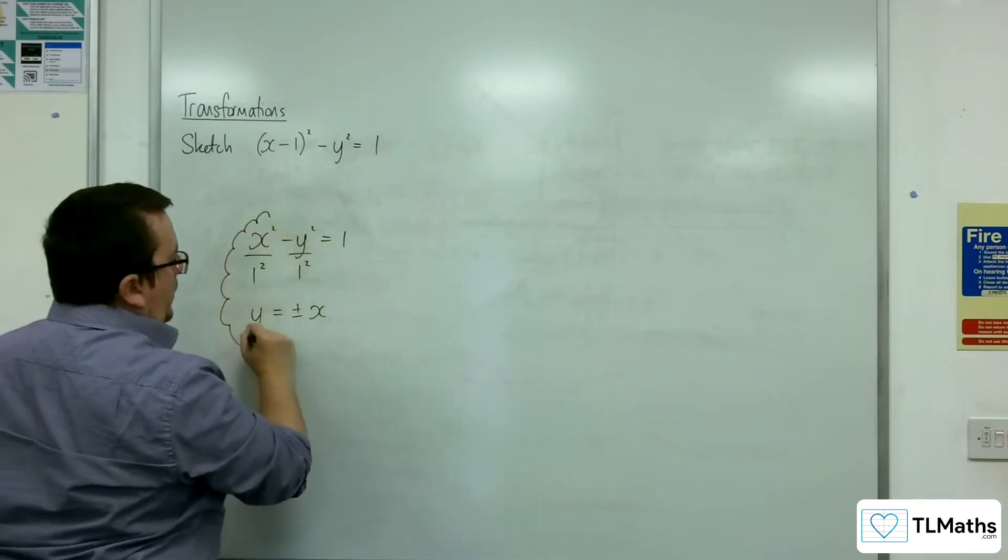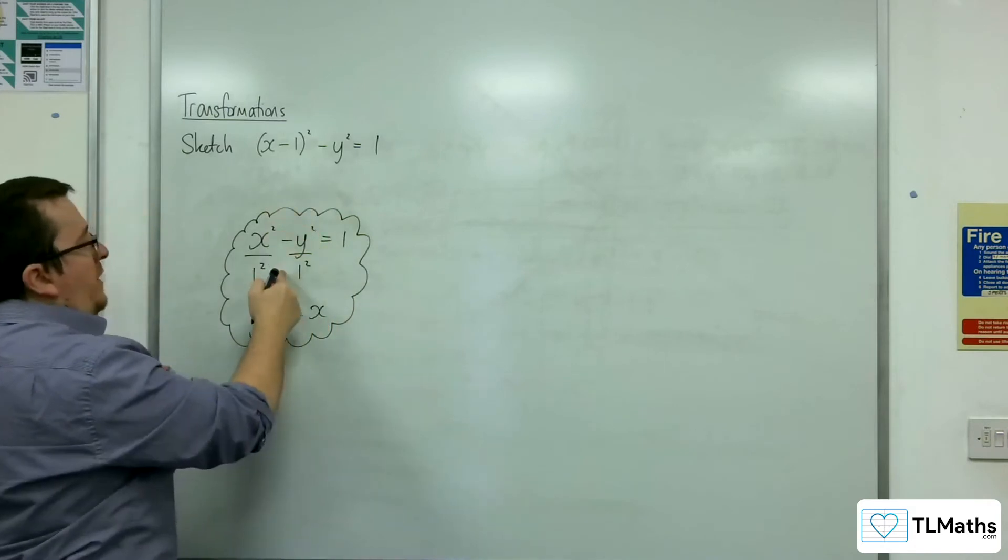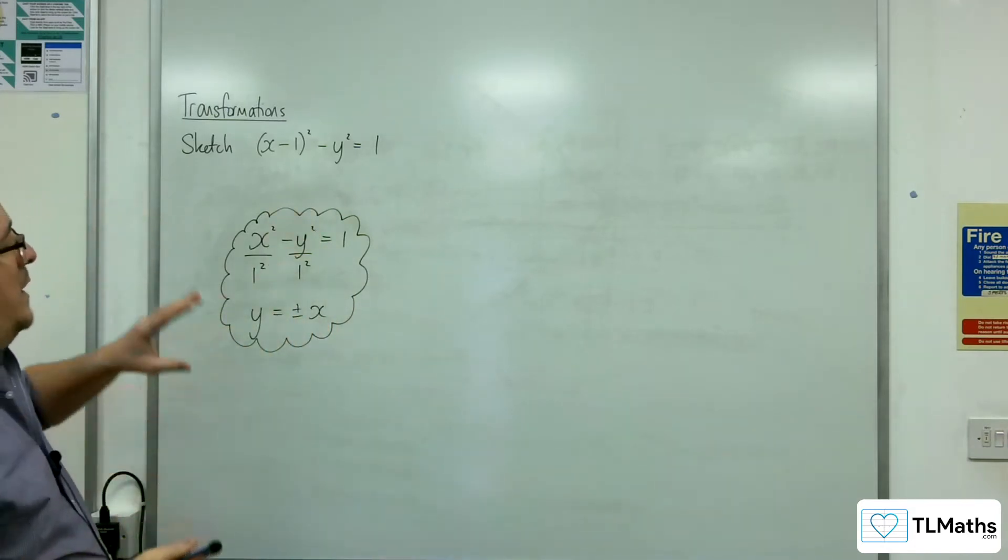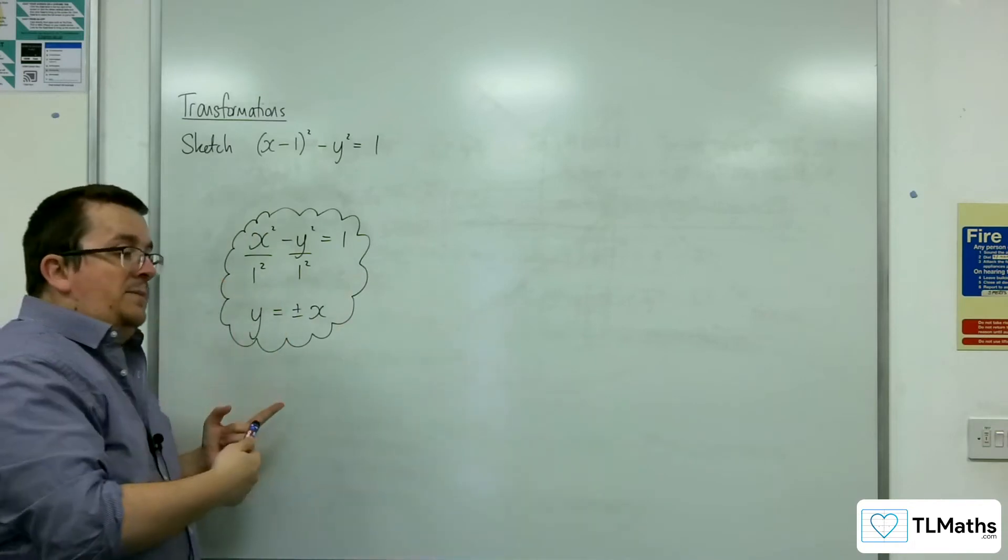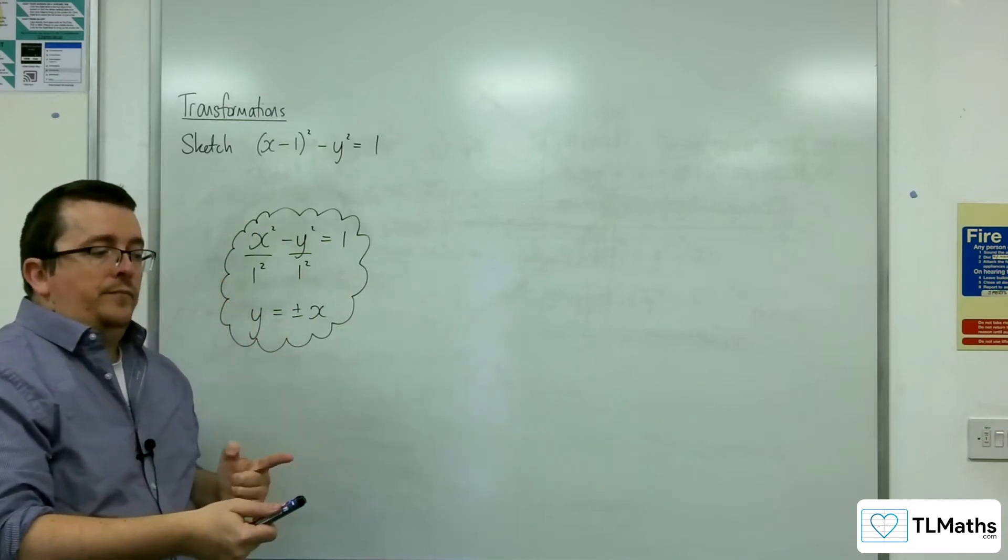So these are the asymptotes that would go with this graph. Now, if you translate that graph one unit to the right, then the asymptotes are going to go with it.